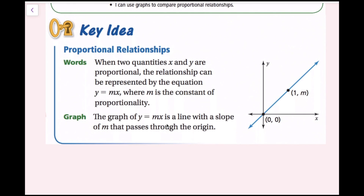Anytime you see the word proportional, you know that the origin is included in your set of points on that line. The constant of proportionality is just the slope of this line, and we call that m. So any proportional relationship can be written in the form y equals mx.